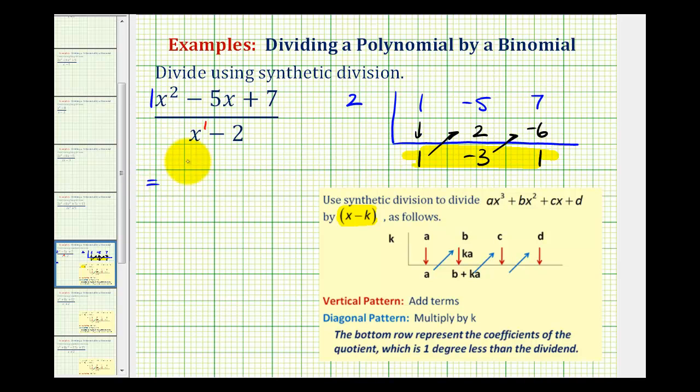So our quotient is one x minus three, and our remainder is one, so we'd have plus one over our divisor of x minus two. But normally when we have a coefficient of one, we leave it off. So we'll leave our quotient as x minus three plus one all over x minus two.